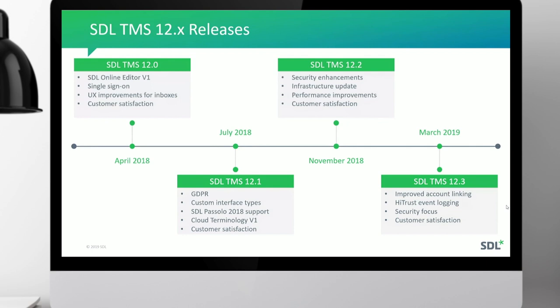We re-engineered some of the translation memory technology and made sure SDL TMS can be deployed on the latest versions of operating systems and Microsoft SQL Server, streamlining both SDL hosting and customer self-hosting. The improved account linking in TMS 12.2 is a convergence theme that makes it much easier to link your organisation to SDL Language Cloud — instead of copying and pasting tenant IDs and API keys, you can simply log into TMS, select the appropriate Language Cloud account from a dropdown, and all the hard work is done in the background.